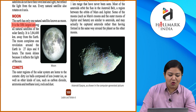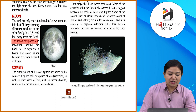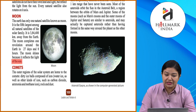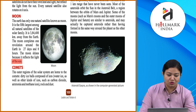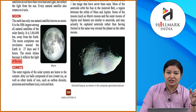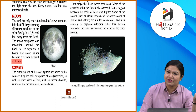The Earth has only one natural satellite, known as the Moon. It is the fifth largest among all natural satellites of the solar system. It is 384,400 kilometers away from the Earth. The Moon completes one revolution around the Earth in 27 days and 8 hours. The Moon shines because it reflects the light of the Sun.